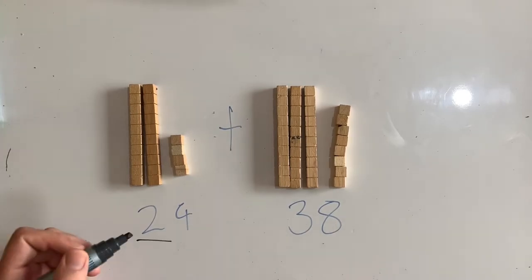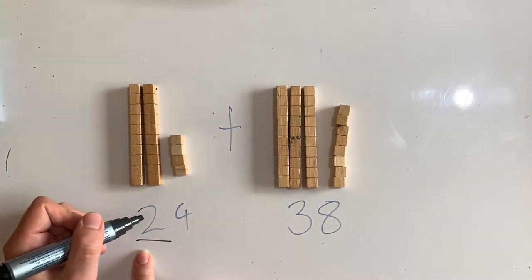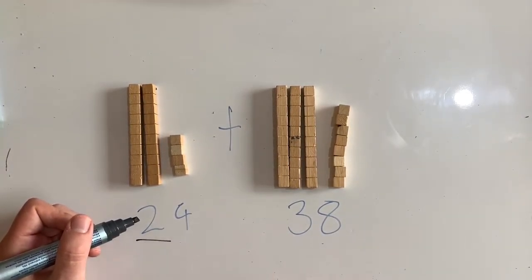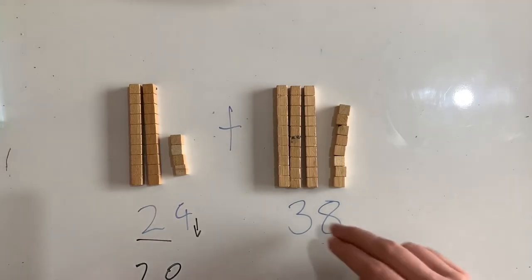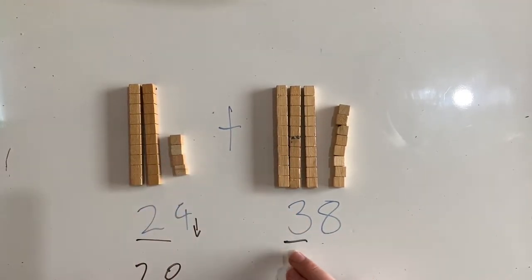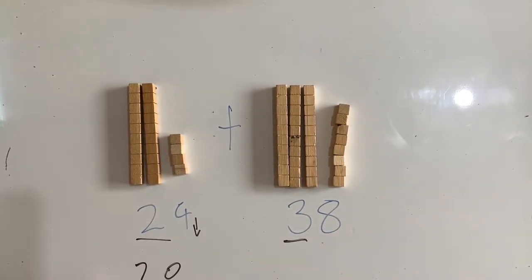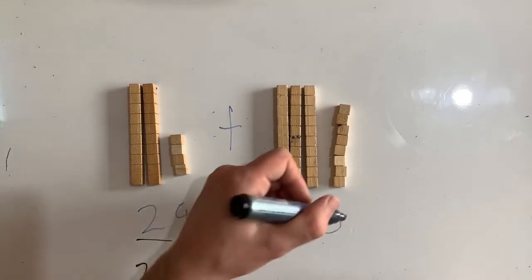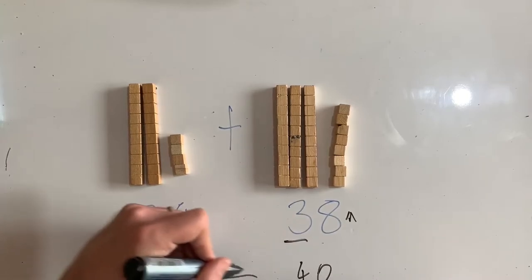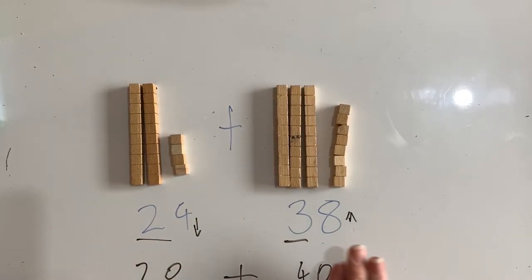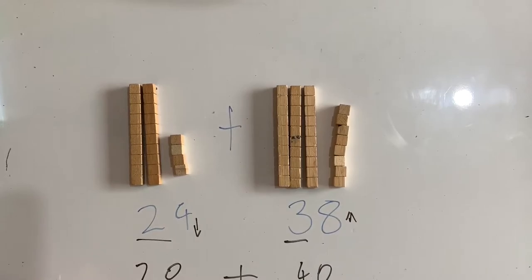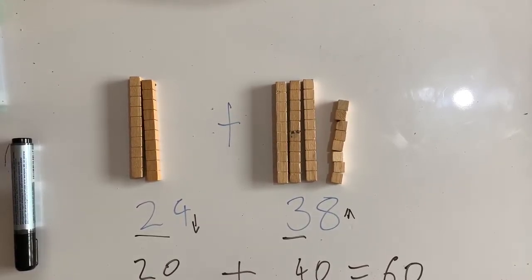I'm going to underline the two in 24 — that's the one I want to know if I'm changing or keeping the same. Looking at the digit to the right, which is a four: four is between zero and four, so it goes down, and 24 becomes 20. For 38, I underline the three. Looking at the units column to the right, that is eight: eight is between five and nine, so this one goes up and becomes 40. Now I'm adding 20 and 40. Two plus four is six, then I add the zero back — 60. So this is my estimation — not the actual answer, but close.